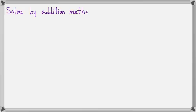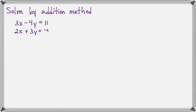Now let's solve another one by addition: 3x minus 4y equals 11 and 2x plus 3y equals negative 4.